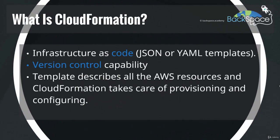A CloudFormation template allows you to define in a text file exactly what your deployment looks like and the configuration of it. And because it's a text file, you can manage it in the same way that you would manage code, using version control. So you could use Git, Subversion, or Microsoft Source Safe to manage the version control of that text file.